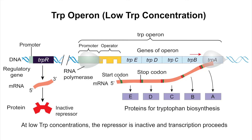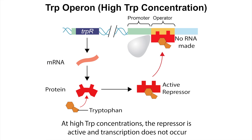Looking at the diagram, the operon has the same format: a promoter, an operator, and all the genes for tryptophan biosynthesis. When tryptophan is at low concentrations, the repressor cannot bind to the operator, so the trp operon is transcribed and the proteins for tryptophan biosynthesis are made. However, at high concentrations of tryptophan, tryptophan itself acts as the inducer molecule and binds to the repressor protein. This causes a conformational change that allows the repressor to bind to the operator, blocking RNA polymerase and stopping transcription, so the proteins for tryptophan biosynthesis are no longer made.